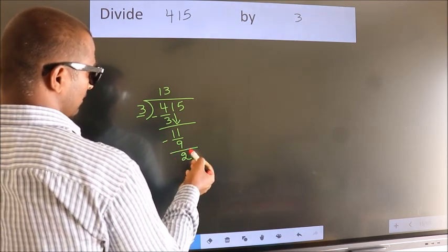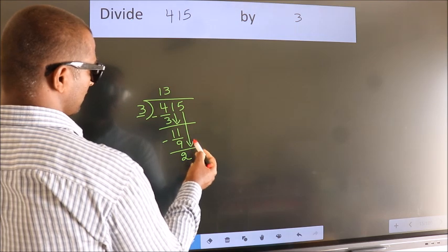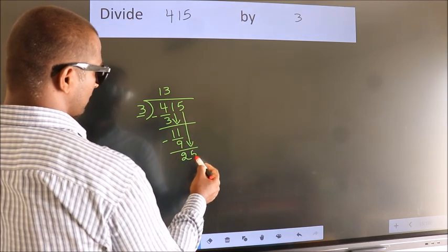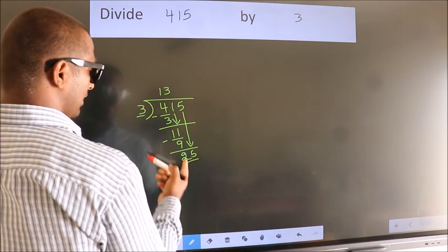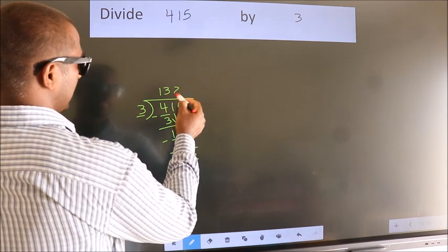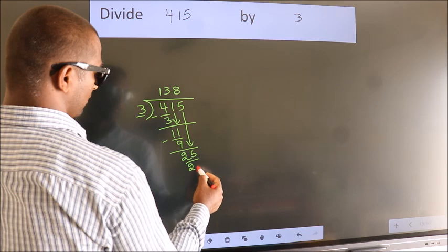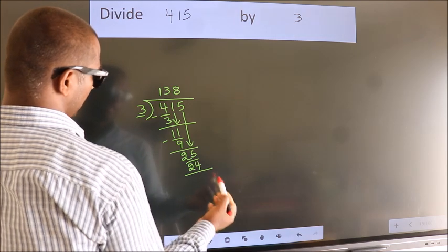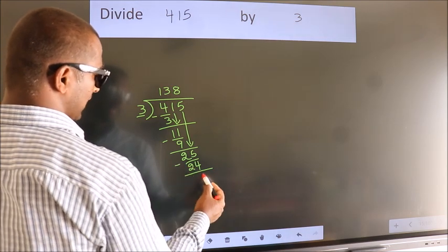After this bring down the beside number. So 5 down. So 25. A number close to 25 in 3 table is 3 times 8 is 24. Now we subtract. We get 1.